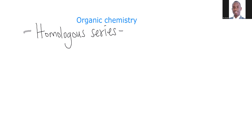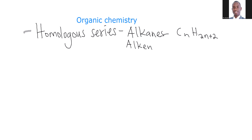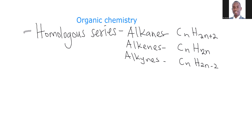We start off with the alkanes, and the alkanes have this general formula of CnH2n. Then you have the alkynes, which have a general formula of CnH2n-2. This one is typically, according to your syllabus, the organic chemistry one.